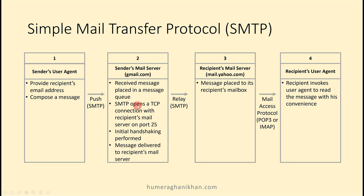The message is received and placed in a message queue. Gmail then opens a TCP connection with the recipient mail server, which is mail.yahoo.com. SMTP opens this TCP connection on port number 25, performs initial handshaking, and delivers or relays the message to the recipient mail server.